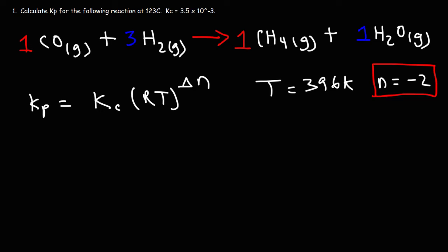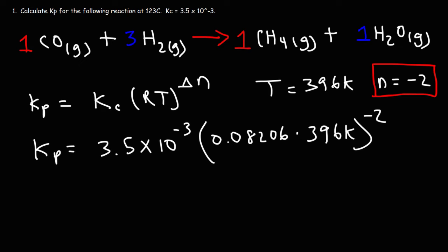So now that we have that, let's go ahead and plug everything in to this equation. The equilibrium constant for concentration is 3.5 times 10 to the minus 3. Our R value is 0.08206, and we have a Kelvin temperature of 396. And then delta N, that's negative 2.